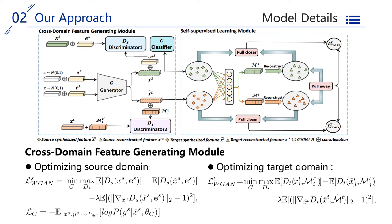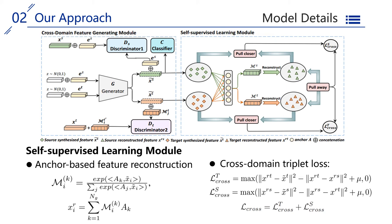The cross-domain feature generating module is designed to generate fake features based on class-level attributes for both labeled source domain and unlabeled target domain. Then, the fake features are sent into self-supervised learning module.